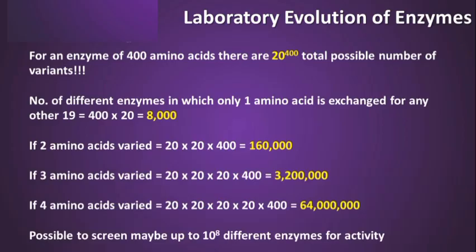One of the challenges for laboratory evolution of enzymes is that if you do the maths, the numbers of possible different genes and enzymes you can generate is truly astronomical. For an enzyme of 400 amino acids, there are a total of 20 to the power of 400 possible different variants. To give some sense of how big this number is, there are approximately 10 to the 70 or 10 to the 80 atoms in the universe. If you simply take a typical enzyme and change only one amino acid for any of the other 19 naturally occurring amino acids, you immediately generate 8,000 different variants. If two amino acids are varied, it's 160,000, and so on.